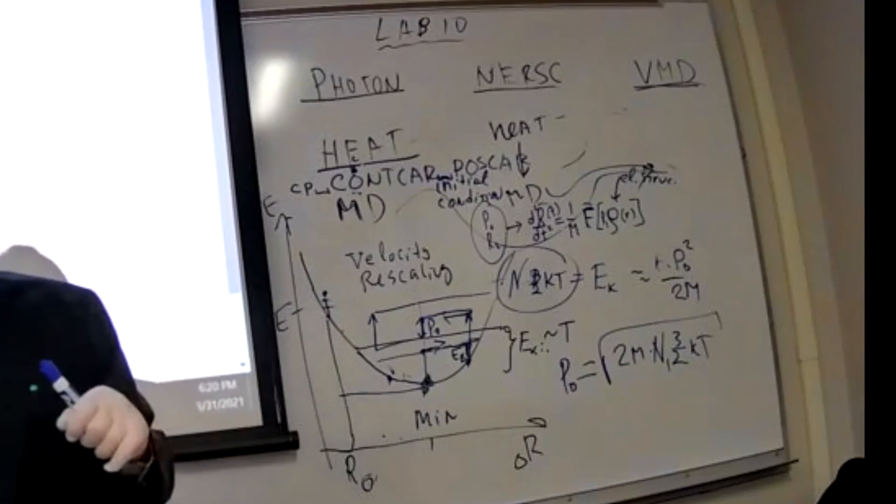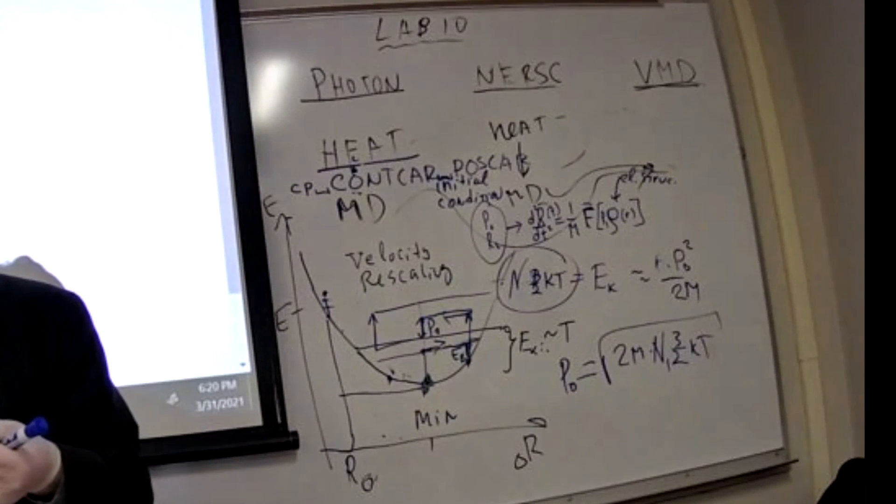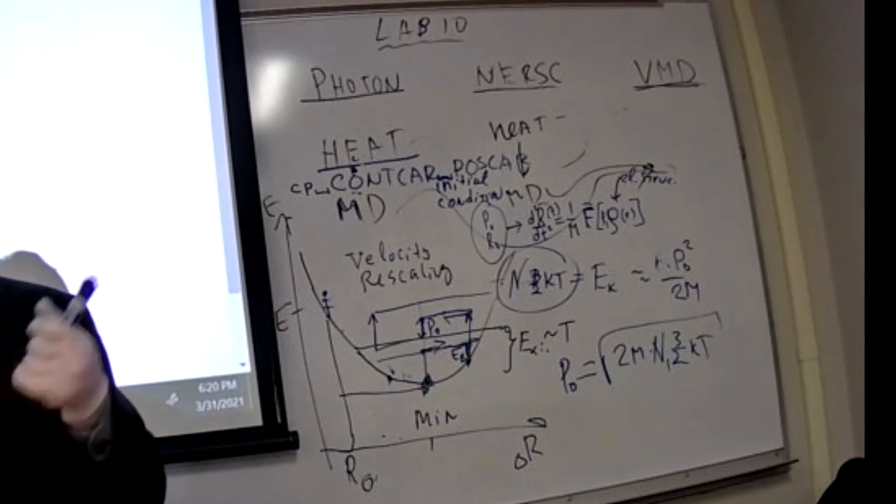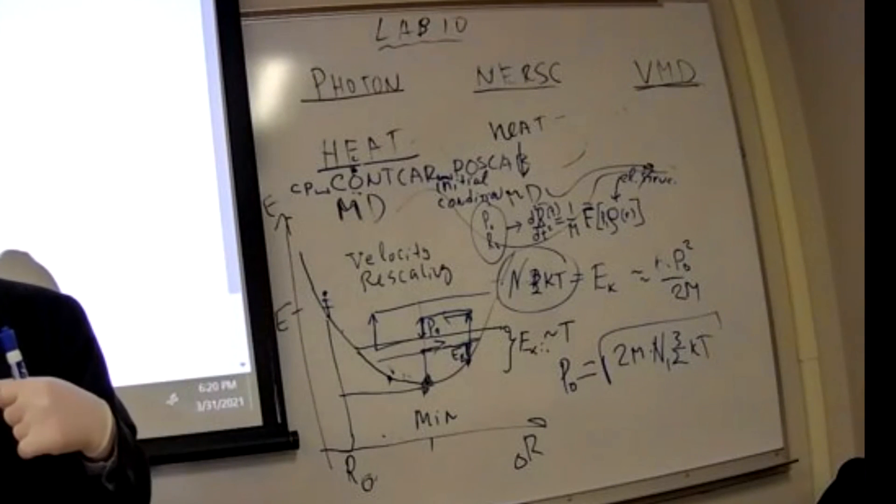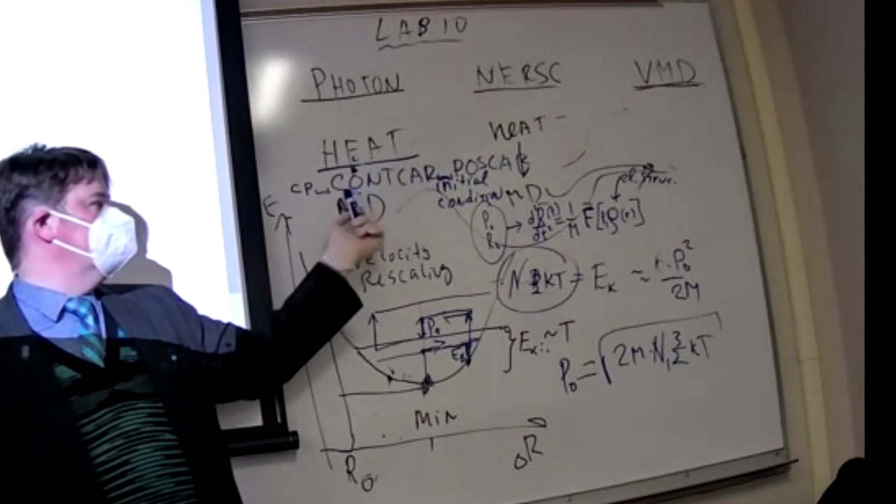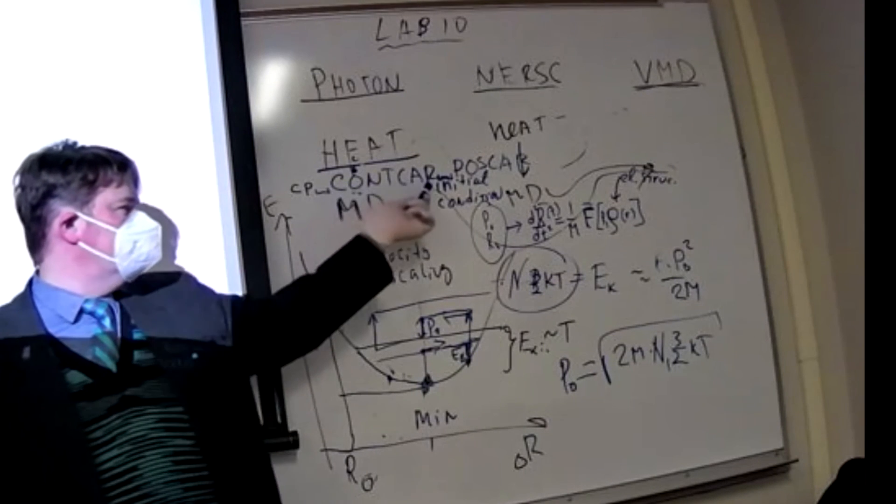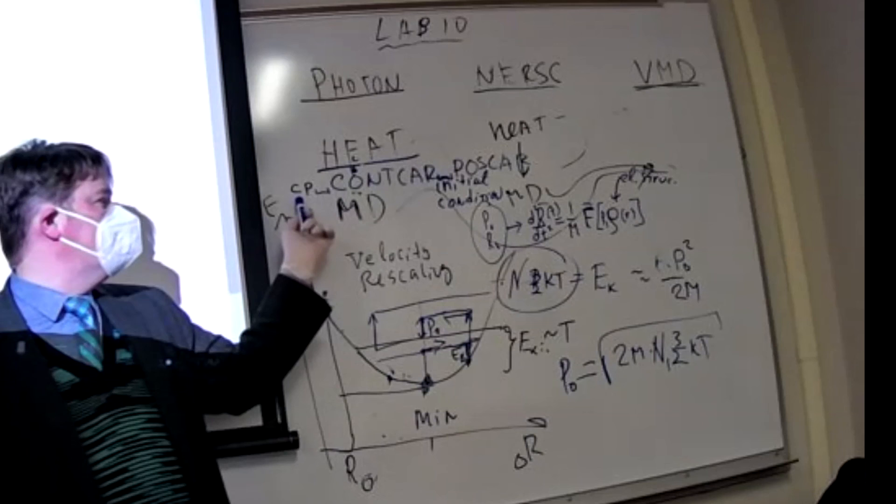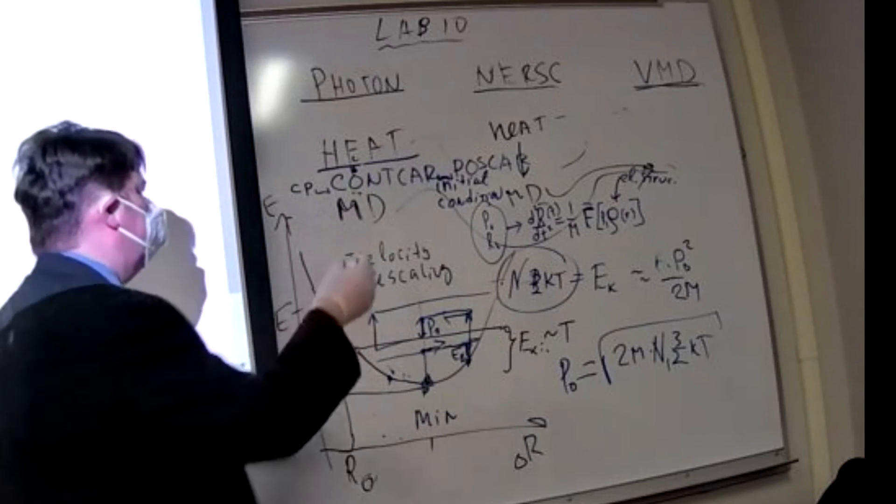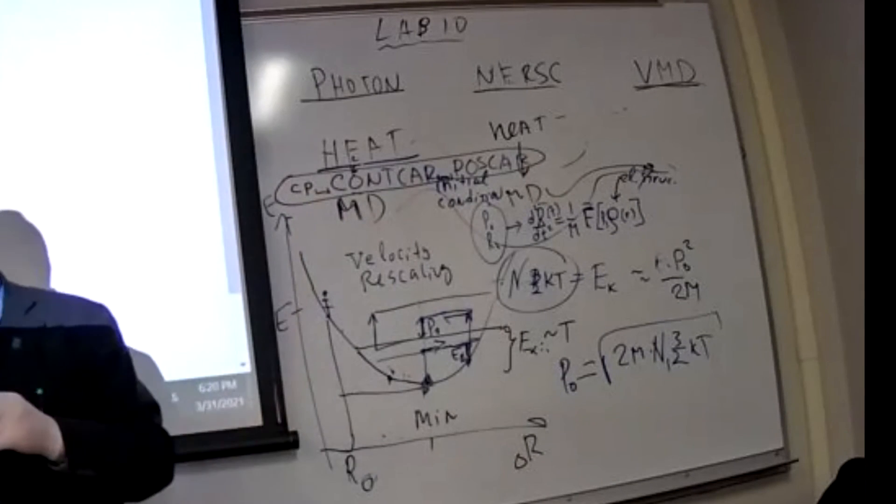Before we run the so-called MD job, and each job in class corresponds to like running a command with specific inputs. But in addition, there should be connection, the last geometry of the heating stage, which is stored in the file carbon. It needs to be copied into the file carbon, which will be initial geometry for molecular dynamics.